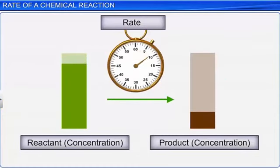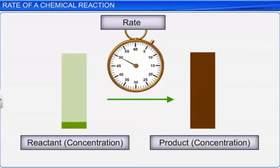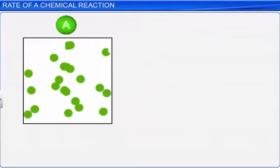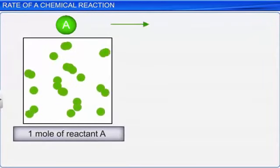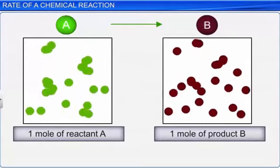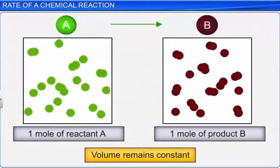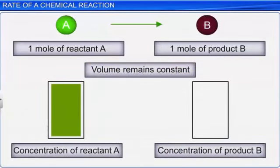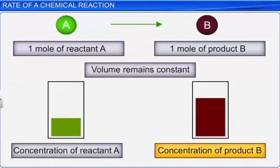Thus, the change in the concentration of the reactants or products with respect to time is called the rate of a reaction. In other words, the reaction rate specifies how fast a reaction takes place. Consider a simple reaction in which one mole of reactant A produces one mole of product B. Let us assume that the volume of the system remains constant. Initially, the concentration of reactant A is maximum, while the concentration of product B is zero. As the reaction proceeds, the concentration of reactant A decreases, while the concentration of product B increases.